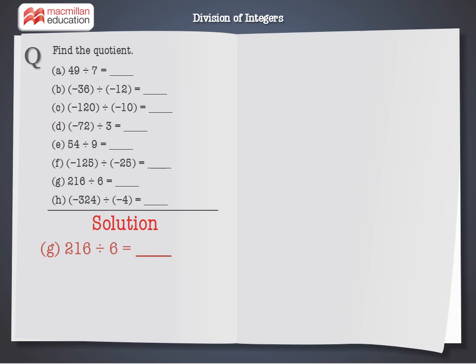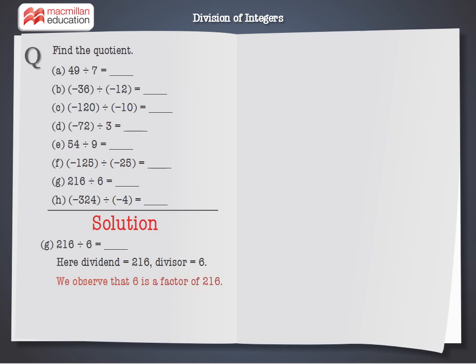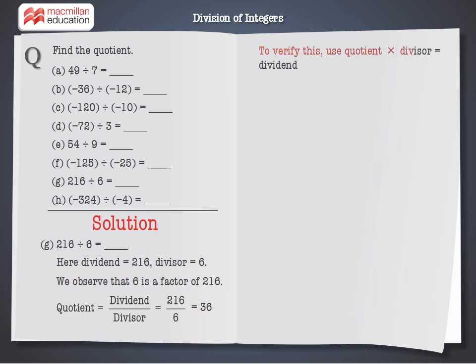G: minus 216 divided by minus 6. Here, dividend is equal to minus 216, divisor is equal to minus 6. We observe that minus 6 is a factor of minus 216. Quotient equals dividend divided by divisor, which is equal to 36. To verify: 36 multiplied by 6 is equal to 216. Therefore, quotient is equal to 36.